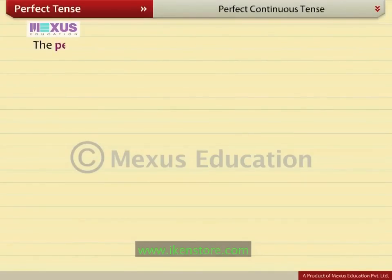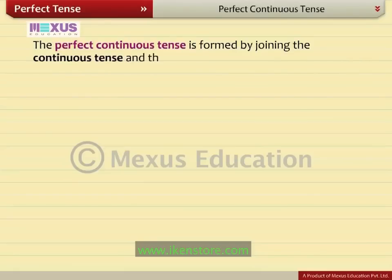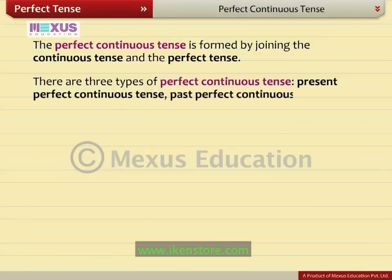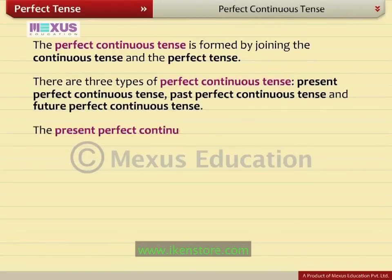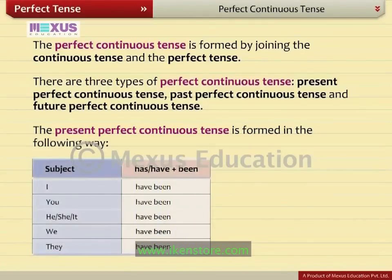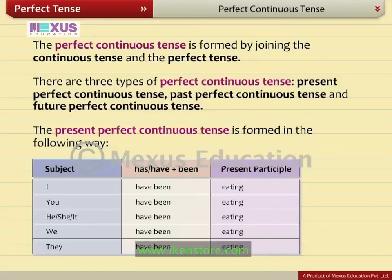The perfect continuous tense is formed by joining the continuous tense and the perfect tense. There are three types: present perfect continuous tense, past perfect continuous tense, and future perfect continuous tense. The present perfect continuous tense is formed in the following way: has or have plus been plus present participle. For example, I have been eating my dinner.